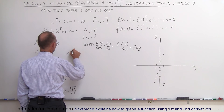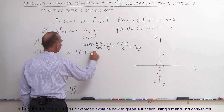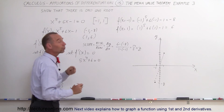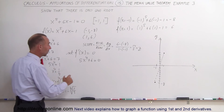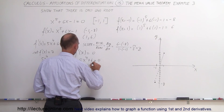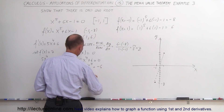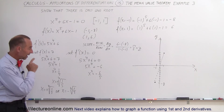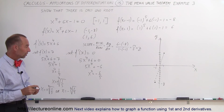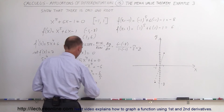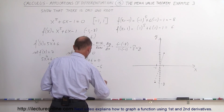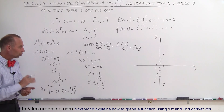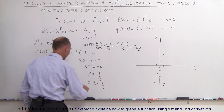Setting f'(x) = 0: 5x⁴ + 6 = 0, so 5x⁴ = -6, meaning x⁴ = -6/5. Taking the fourth root of both sides gives x = ±⁴√(-6/5), which has no real solution. Therefore, there is no local maximum or minimum anywhere on the function in this interval.